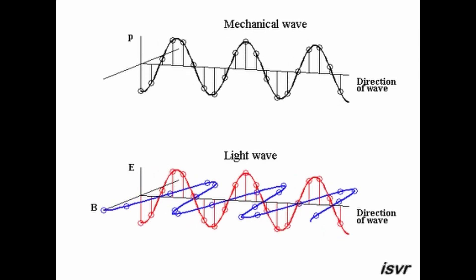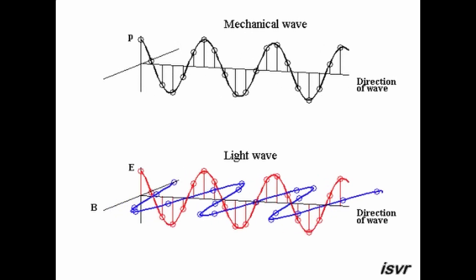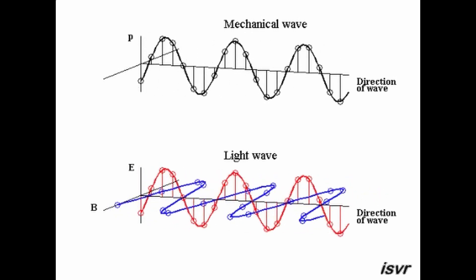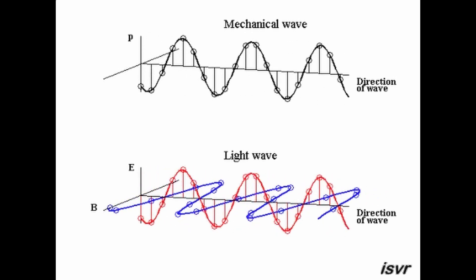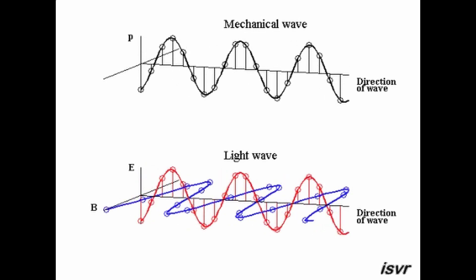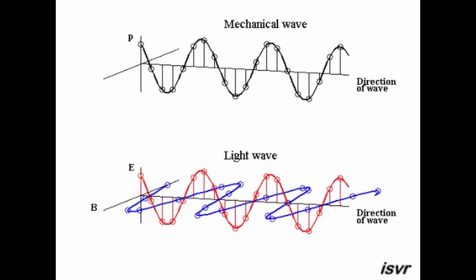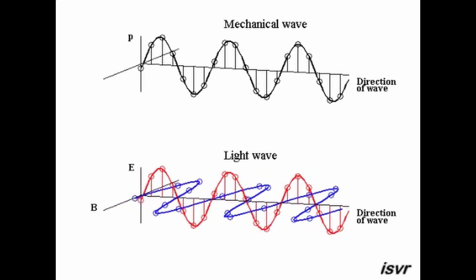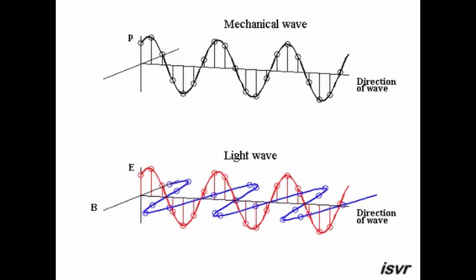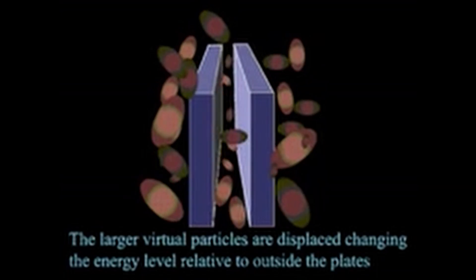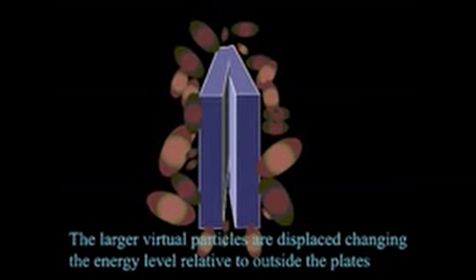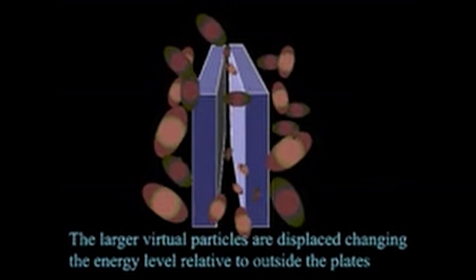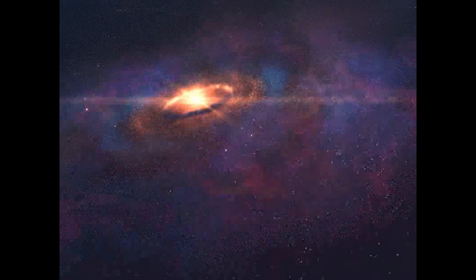This phenomenon is related to the concept of group delay in quantum mechanics, where the interaction of light with certain materials can cause the light to slow down or even appear to move backward. This doesn't violate the laws of relativity because it's a result of the probabilistic nature of quantum particles.